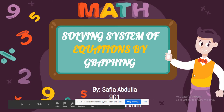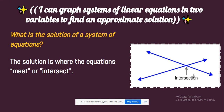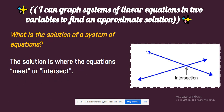Math: solving a system of equations by graphing. I can graph a system of linear equations in two variables to find an approximate solution. The solution is where the equations meet or intersect. When you see two lines and they meet or intersect, this point is called the solution of a system of equations.